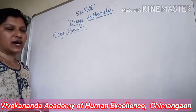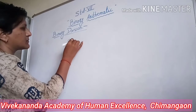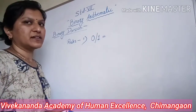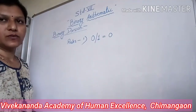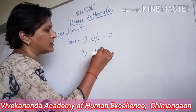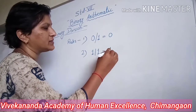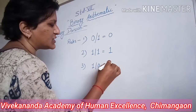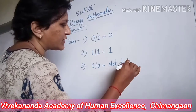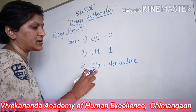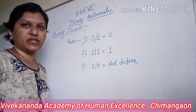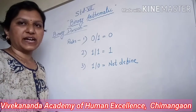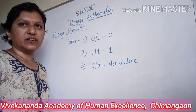The rules for binary division are: the first rule states that if I am going to divide 0 by 1, I will get the result as 0. The second rule states that if I am going to divide 1 by 1, I get the result as 1. And if I am going to divide 1 by 0, this is not defined — as 1 divided by 0 gives an infinite result, so it is non-defined. These are the three rules for binary division. Now let us start with the examples.